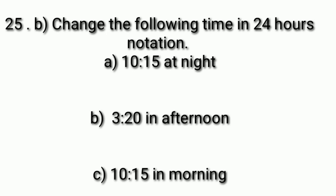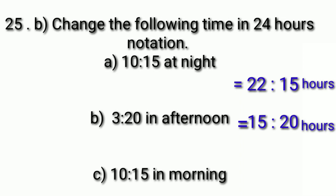Question 25, part B: change the following times to 24-hour notation. When the time given is after noon until midnight, we add 12. If the time is from midnight to noon, we write it as it is. In part A, the time is 10:15 at night, so we add 12 and get 22:15 hours. In part B, the time is 3:20 in the afternoon, so we add 12 and get 15:20 hours. In part C, the time is 10:15 in the morning, so we write it as it is: 10:15 hours.